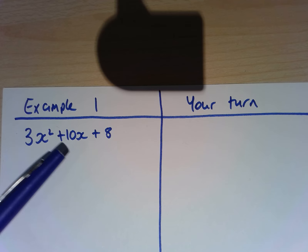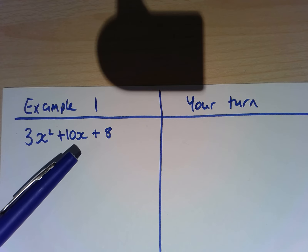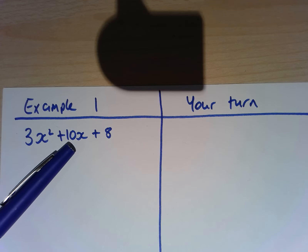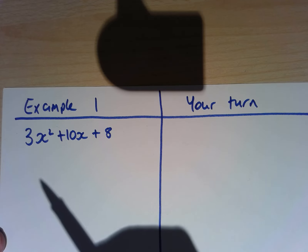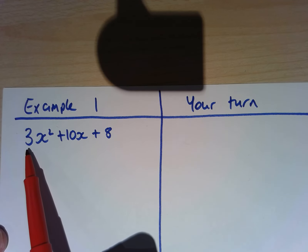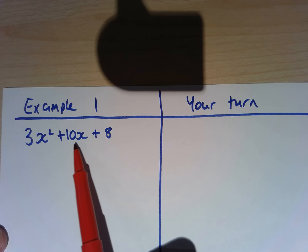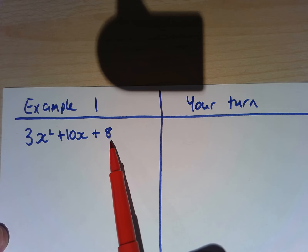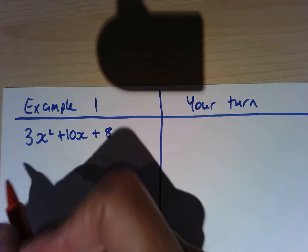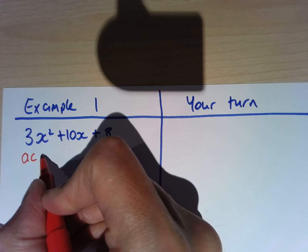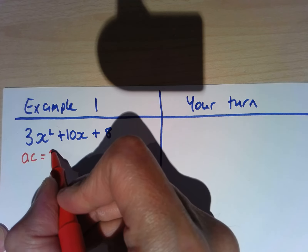This 10x we're going to split into two bits and then factorise from there. We need to decide how we're going to partition it. We use the AC method. We're going to write down the value of AC. We'll call this number A, this number B, and this number C. The AC method requires us to multiply A and C together, so AC is equal to 3 times 8, which is 24.